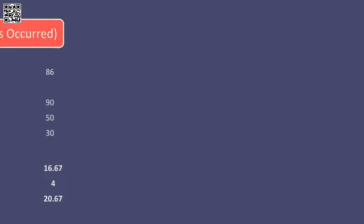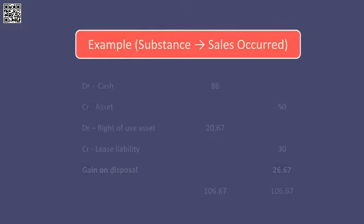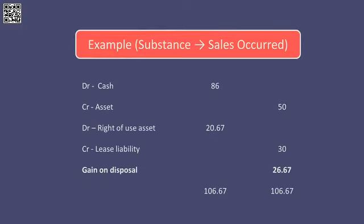Now that we have the right of use asset, the journal is straightforward. Debit cash proceeds of 86, credit the original asset of 50 to remove it from the financial statements, debit the right of use asset at 20.67 as we are leasing the asset back, and recognise a lease liability for the present value of minimum lease payments of 30. To make the journal balance, we need a further 26.67 on the credit side, which is treated as a gain on disposal. It's a journal worth practising a few times to ensure you can handle a sale and leaseback where in substance a sale has occurred.